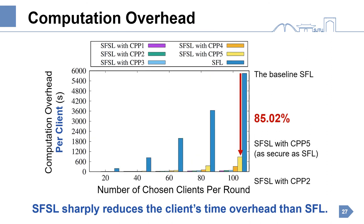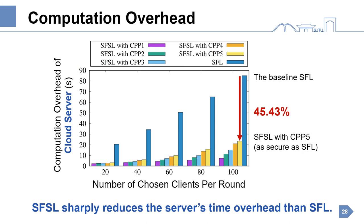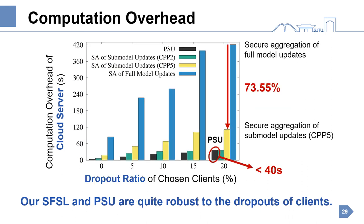Third, it's about computation overhead. On the client side, our SFSL with CPP5 reduces 85% of the computation overhead compared to the baseline SFL. Compared with CPP5, CPP2 can further reduce 91% of computation overhead just by degrading privacy. On the cloud server side, our SFSL with CPP5 can reduce 45% of computation overhead compared to the baseline SFL. Finally, regarding client dropout, our SFSL and private set union are quite robust. Even when the dropout ratio reaches 20%, the time overhead of the cloud server in our private set union is less than 40 seconds.